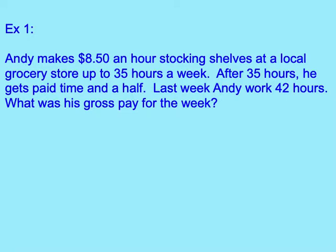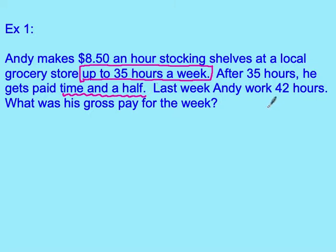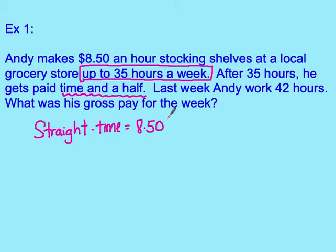Example one: Andy makes $8.50 an hour stocking shelves at a local grocery store for up to 35 hours a week — that's his straight time maximum. Anything after 35 hours he gets paid time and a half. Last week Andy worked 42 hours. What was his gross pay? First, we calculate straight time pay: $8.50 times 35 hours equals $297.50.